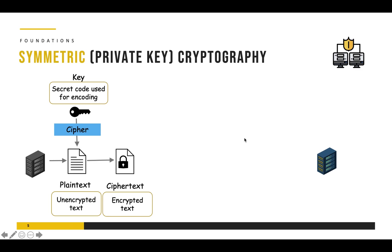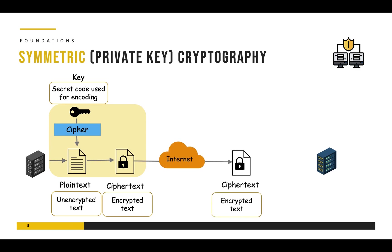Using the key and the algorithm with plain text as the input, we get ciphertext as output, and this completes the encryption part. The basic aim of encryption was so that we could transmit data over the public internet without compromising its confidentiality. We converted plain text into ciphertext, and even if somebody gets a copy of it while it is flowing over the internet, they would still not be able to easily break it because it's encrypted.